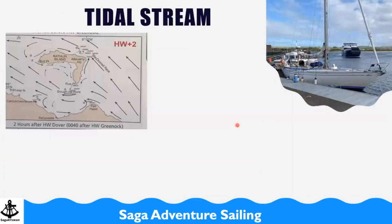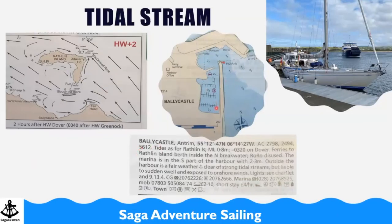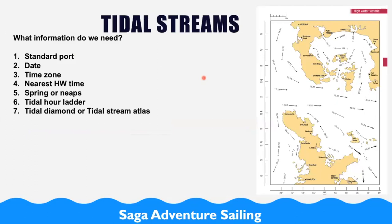In the almanac we can also find tidal information for each of the marinas. This is from Northern Ireland where we were last summer — we went to Ballycastle, which is also where the Giant's Causeway is. You can read information about the marina; in this case the draught was 14 and a half metres so we were too big to go into the marina and had to stay outside on the pontoon. The almanac is the bible and you need to study it very carefully before you go anywhere.